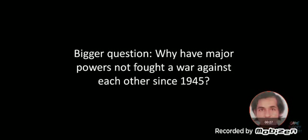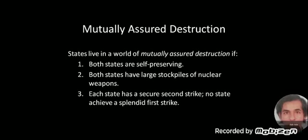States live in a world of Mutually Assured Destruction if three conditions hold. First, the states are self-preserving—they actively don't want to die or something crazy like that. Second, both states have large stockpiles of nuclear weapons. And three, each state has a secure second strike, that is to say, no state can achieve a splendid first strike. Step one, pretty obvious, right? In order to actually have states doing sensible things, you need to have states actually actively wanting to do sensible things like not die.